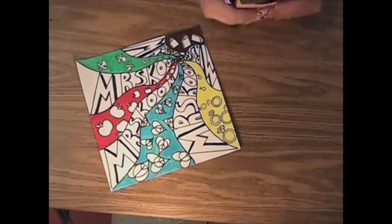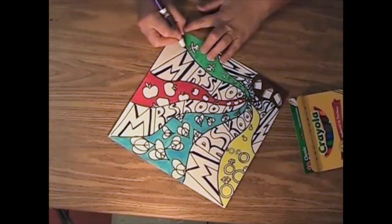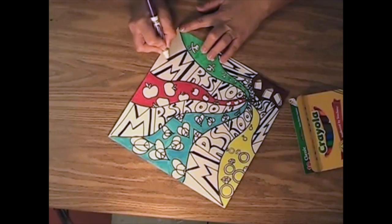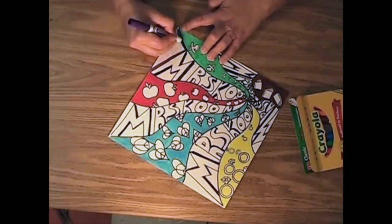I'm just going to fill in the background of my name with the purple and that will be for all five of my name spaces.